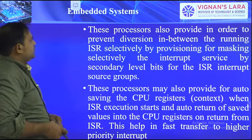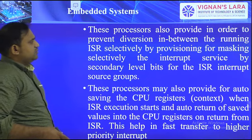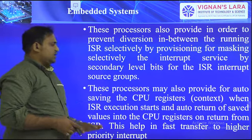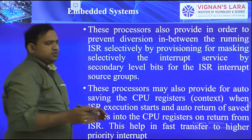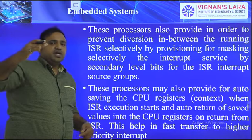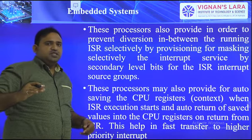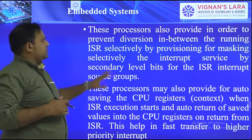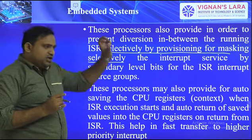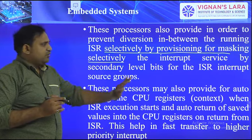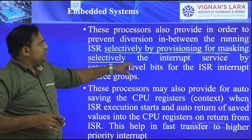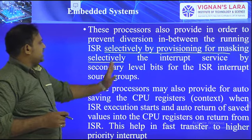The process also provides the ability to mask interrupts selectively — for example, allowing only one interrupt from a specific device like a timer. Interrupt masking can be done selectively using secondary level bits for the ISR interrupts. With tasks D, C, B, A where D is highest and A is least priority, we can selectively enable or disable specific interrupts.